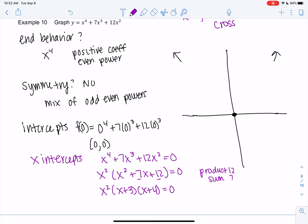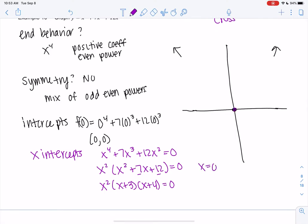So I have three zeros. x equals zero is a zero. And since it has multiplicity two, it just touches and turns. It does not cross. So that was the rule for even powers. So it's just going to touch. We can leave that as a sketch. x equals negative 3 and x equals negative 4. Those have multiplicity 1, which means they cross. So it's going to cross 3 and it's going to cross negative 4.